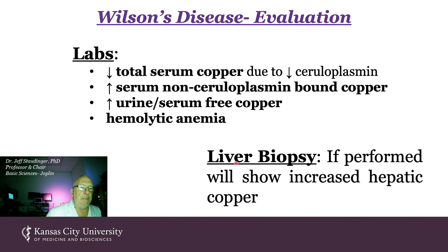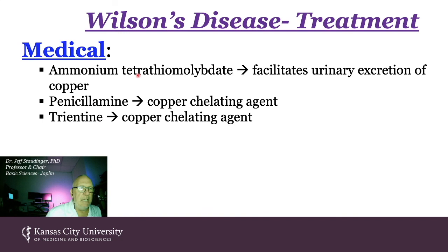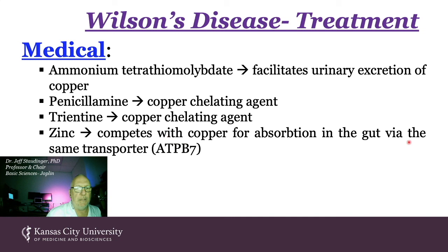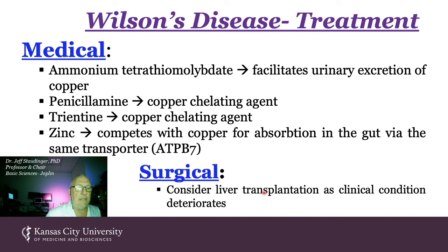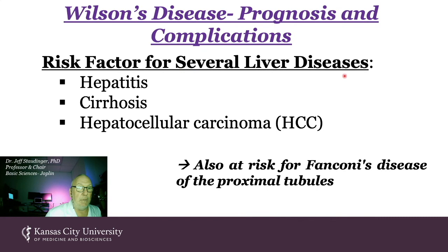Treatment includes chelating agents: ammonium tetrathiomolybdate, penicillamine, and trientine — all copper chelating agents that promote excretion. You can also administer zinc, which competes with copper for absorption in the gut via the same transporter, or proceed to liver transplantation as the clinical condition deteriorates. Wilson's disease is a risk factor for hepatitis, cirrhosis, and hepatocellular carcinoma. These patients are also at risk for Fanconi's disease of the proximal tubules.